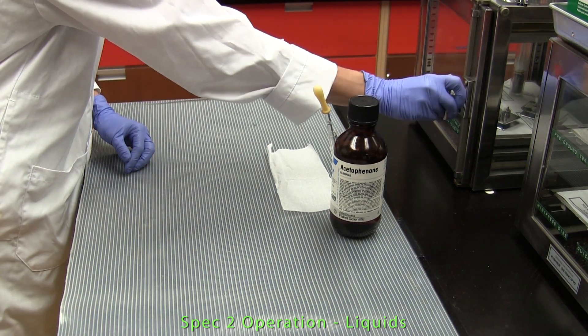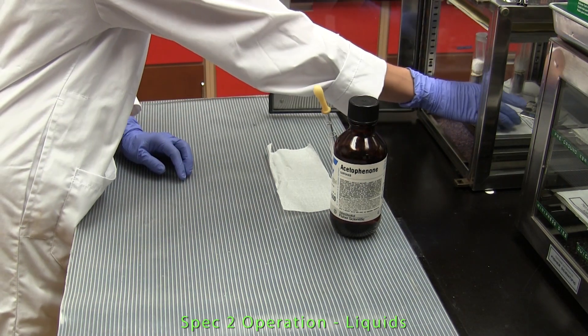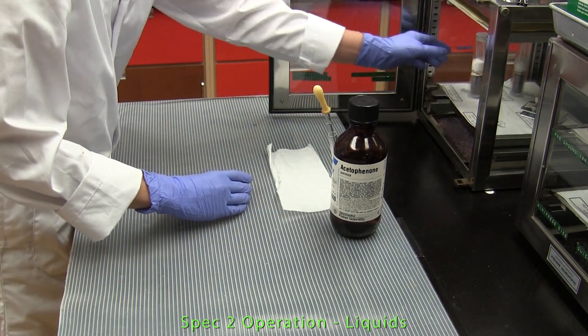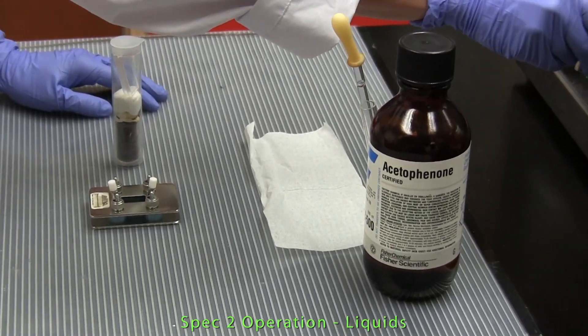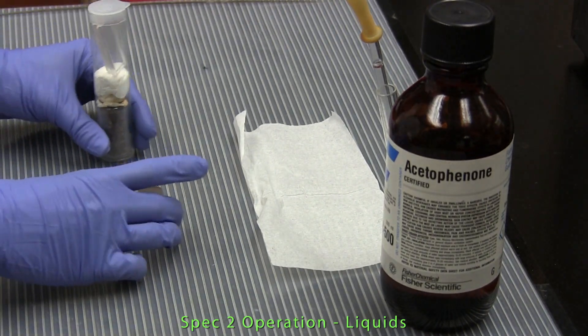For convenience, the basic instructions for obtaining a spectrum on this instrument are posted nearby. But first we need to prepare the liquid for spectroscopy. The equipment we need to do this is contained in a desiccator.